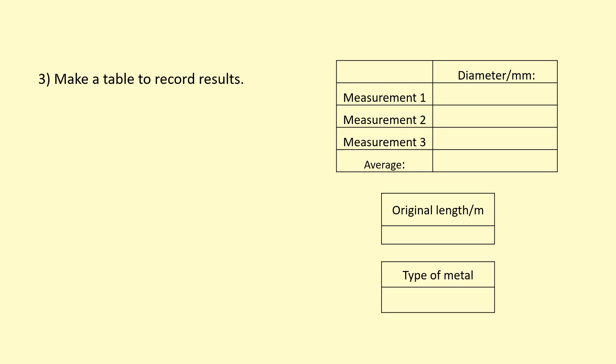Write down the type of metal that you use because you're going to have to check the Young's modulus online for this material once you've determined it yourself and compare what you got to what's online.